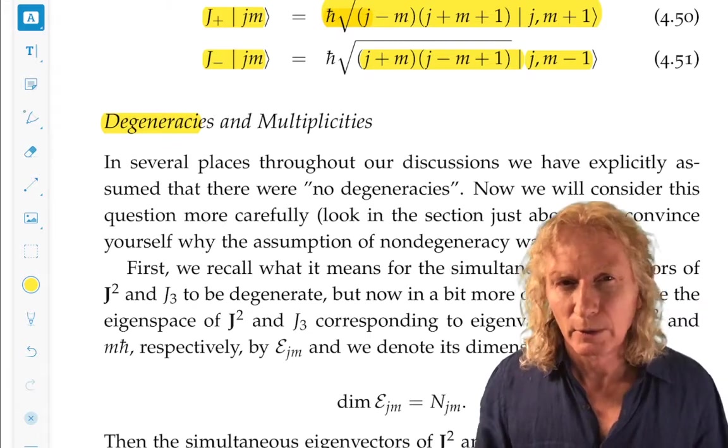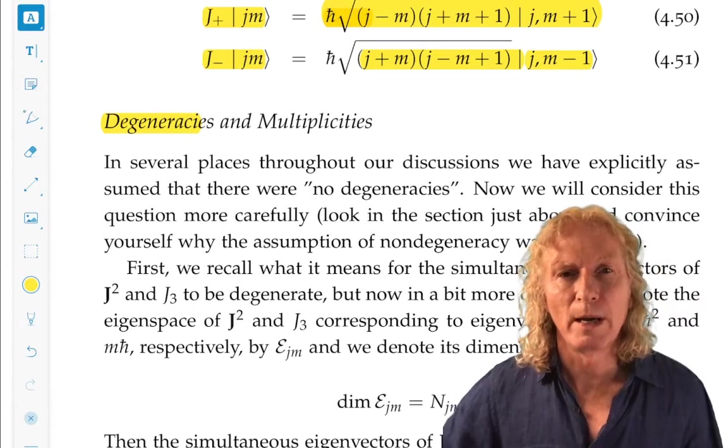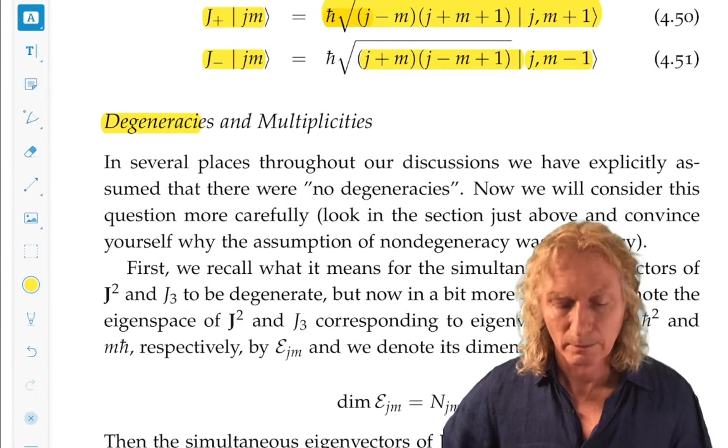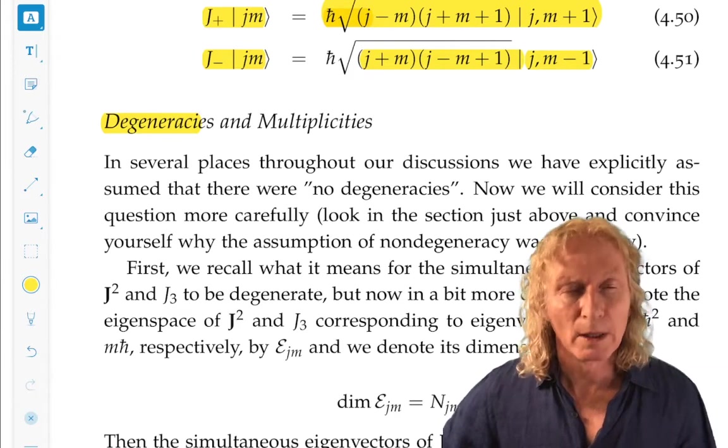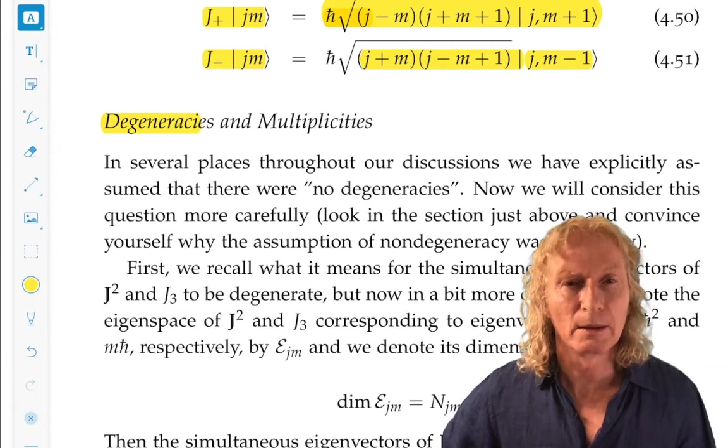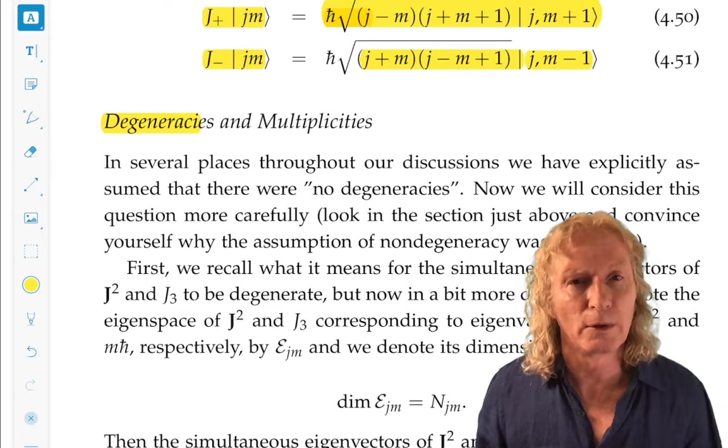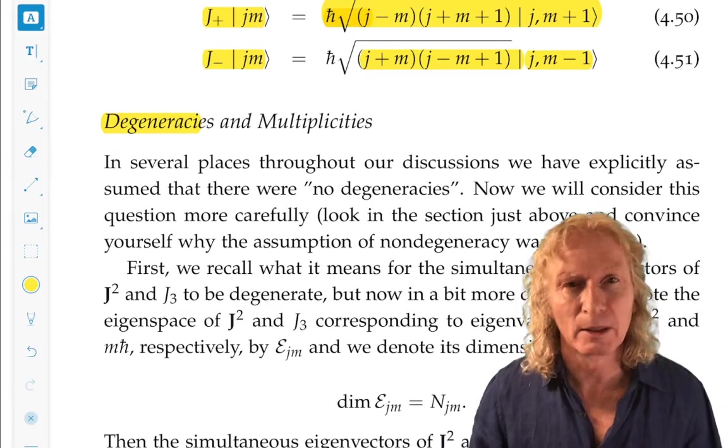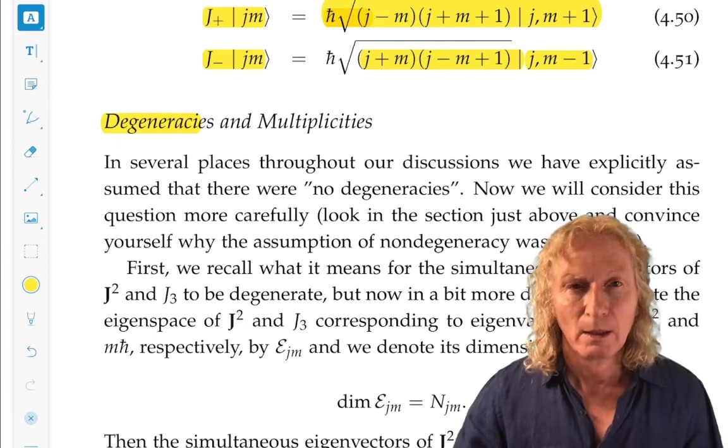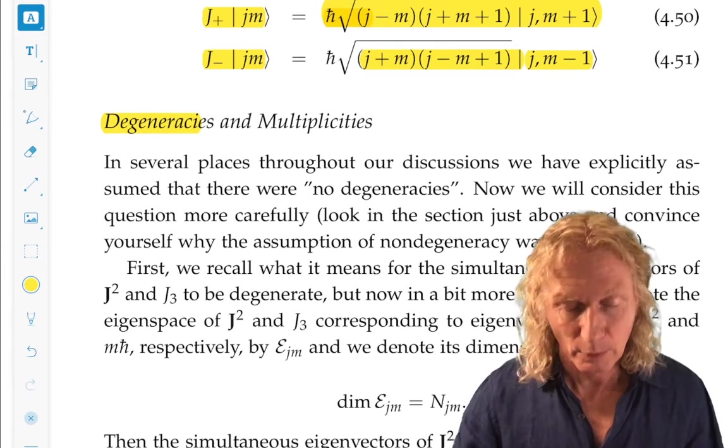We neglected that earlier and you can see in a few places it's useful to go back and see where I actually used it. We assumed a one-to-one relation between eigenvalues and eigenvectors. Of course, we know for self-adjoint operators we have a complete set of eigenvectors, even if we don't have enough eigenvalues.